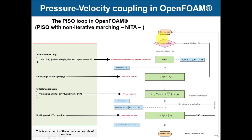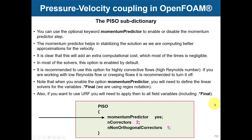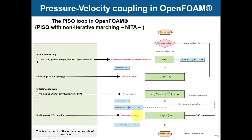The PISO loop is very similar to SIMPLE: you solve your equation, under-relax, compute the momentum predictor, then the pressure equation. The PISO correctors loop controls how many times you re-compute better approximations of gradients. When you increase correctors, you loop back and use a better velocity approximation, computing better gradients — this gives more stability. You are resolving the equations more times, but you get better solution accuracy and stability.